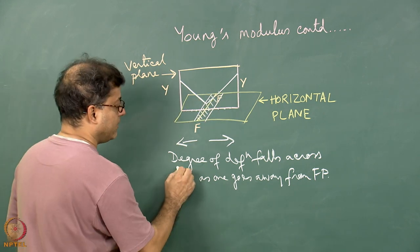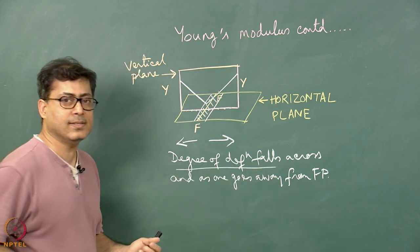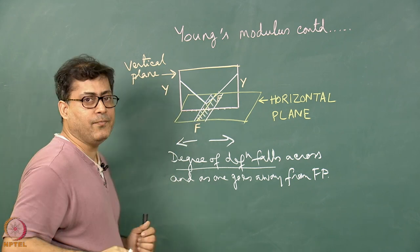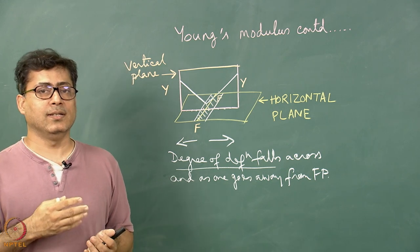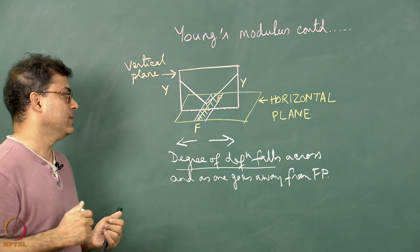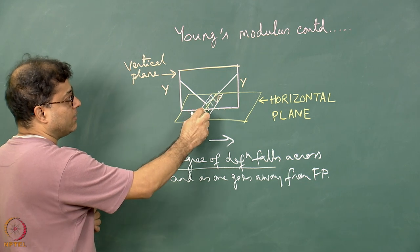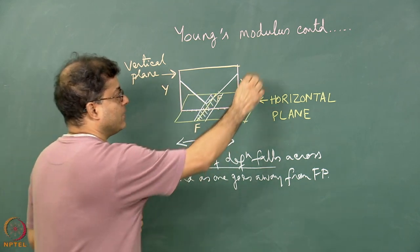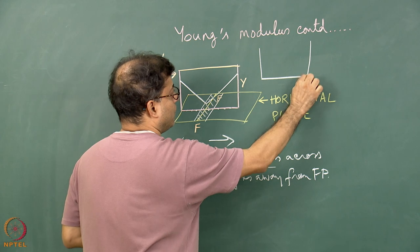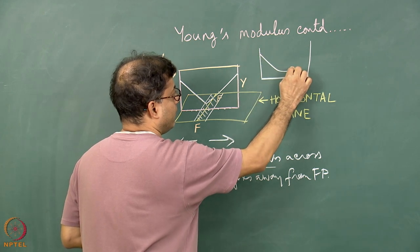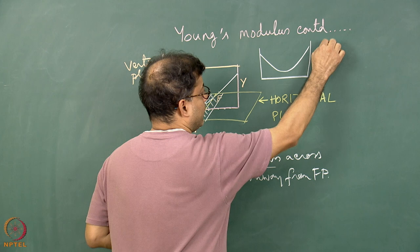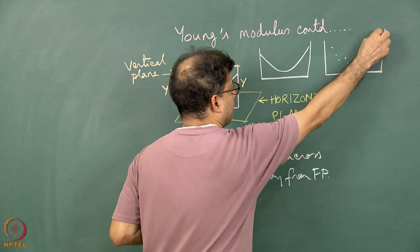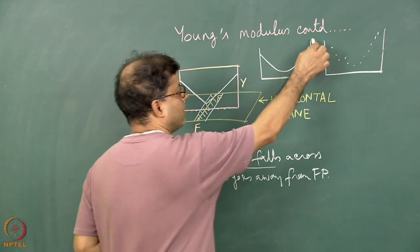What do I mean when I say the degree of deformation increases or decreases? The rocks can be more intensely fractured close to the fault, and as you go away from the fault, the fracture intensity or fracture density is commonly reduced, as has been observed. Since these rocks are highly fractured and already deformed, the Young's modulus will be reduced. The ideal V-pattern may not always appear; it is possible to get other curve shapes as well.